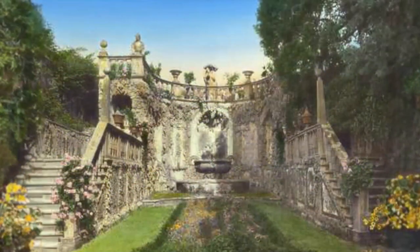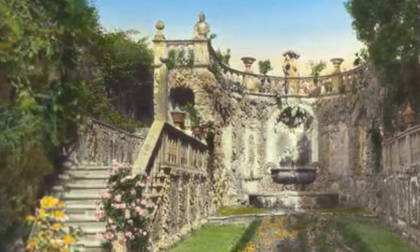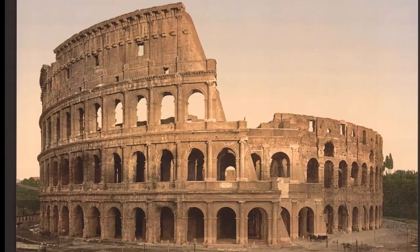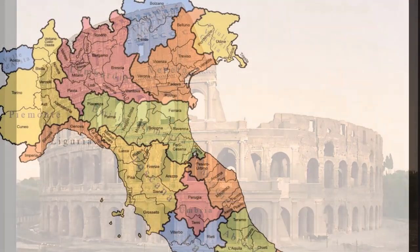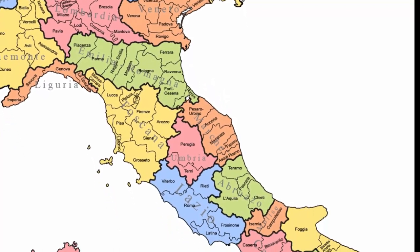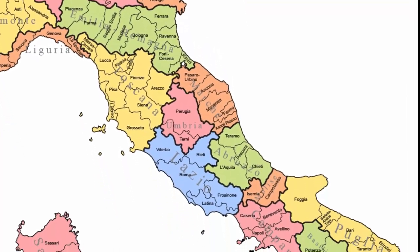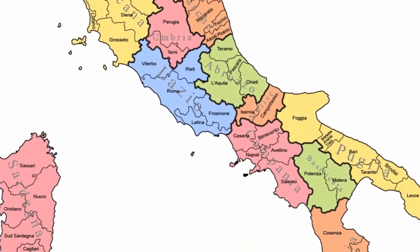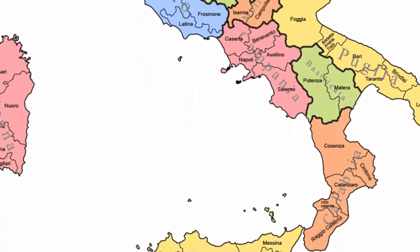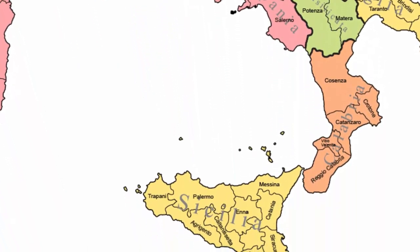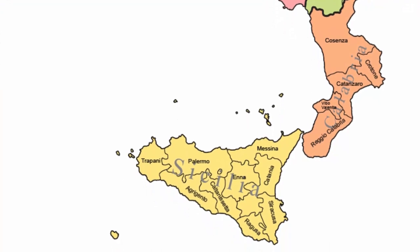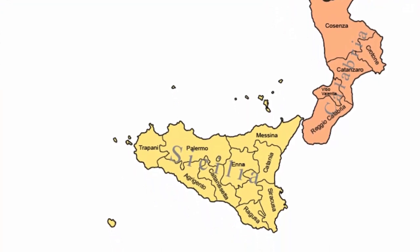Other regions, like Lazio, Lombardy, and Piedmont, are overshadowed by their capitals — Rome, Milan, and Turin. Italy is further divided into 110 provinces. Each province is headed by a president and is assisted by a provincial council and a provincial executive. The provinces are the smallest areas shown on a map of Italy.